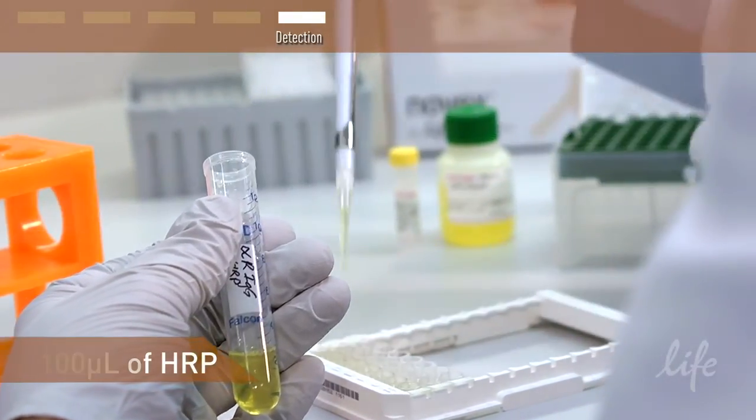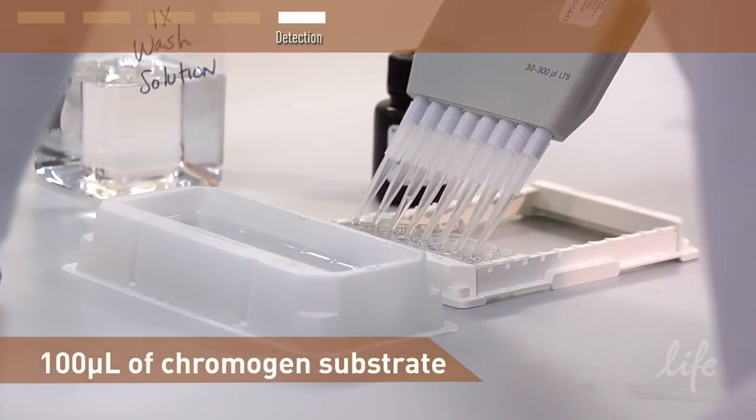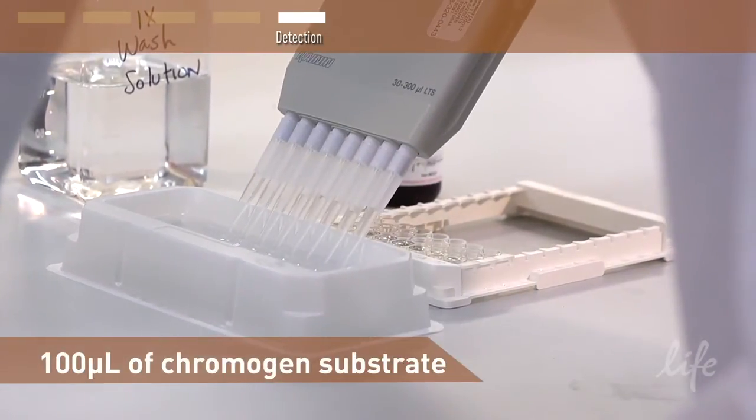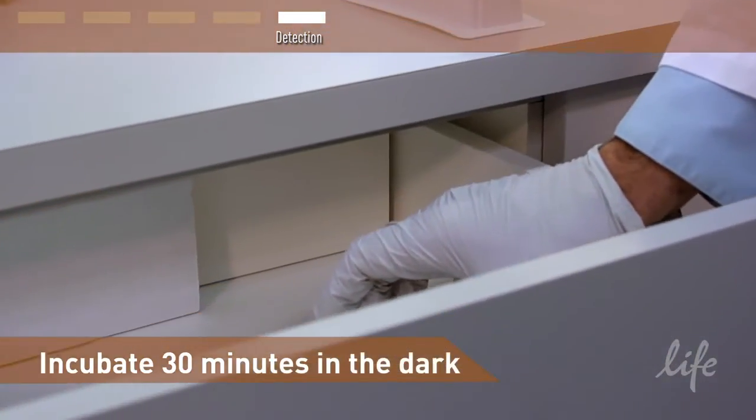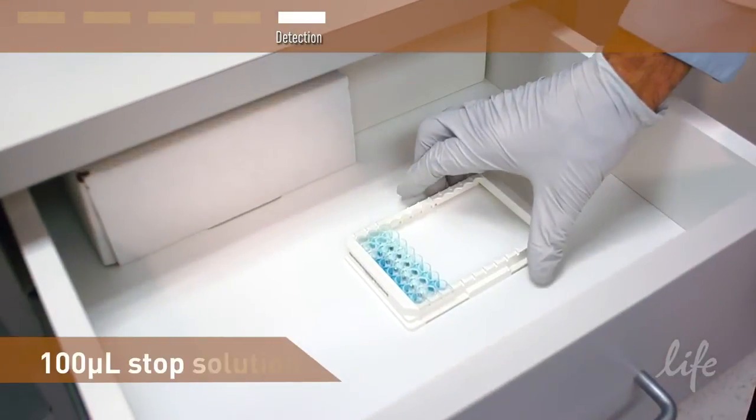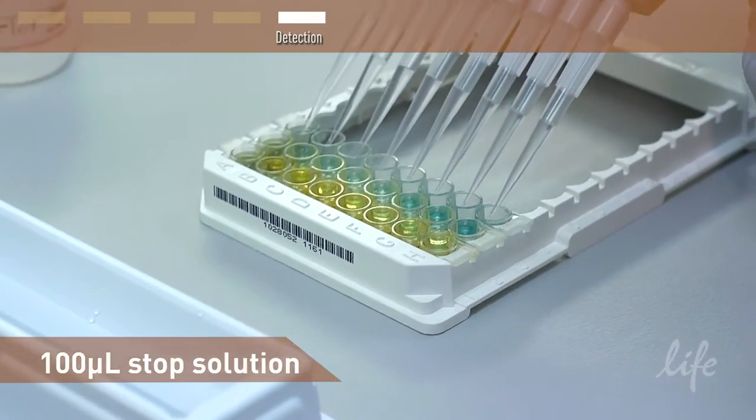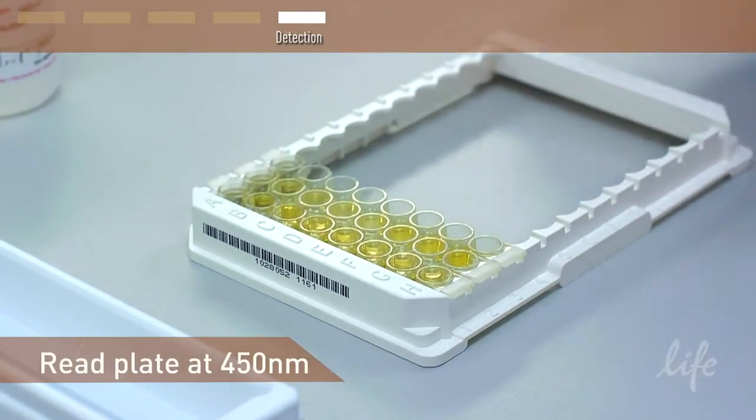After 30 minutes of HRP incubation, wash away excess HRP and add 100 microliters of the chromogen substrate to each well containing sample or standard. Incubate the plate for 30 minutes at room temperature in the dark. Use 100 microliters of stop solution to terminate the HRP substrate interaction. Read your plate at 450 nanometers absorbance.